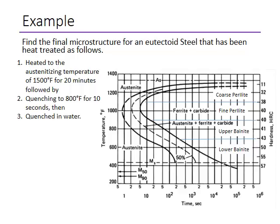Here is another example: find the final microstructure for a eutectoid steel treated as follows using the same diagram. Step one is again starting with 100% austenite. Step two is quenching to 800°C and waiting for 10 seconds. We lower the temperature to 800°C and wait 10 seconds, stopping at that point on the diagram.